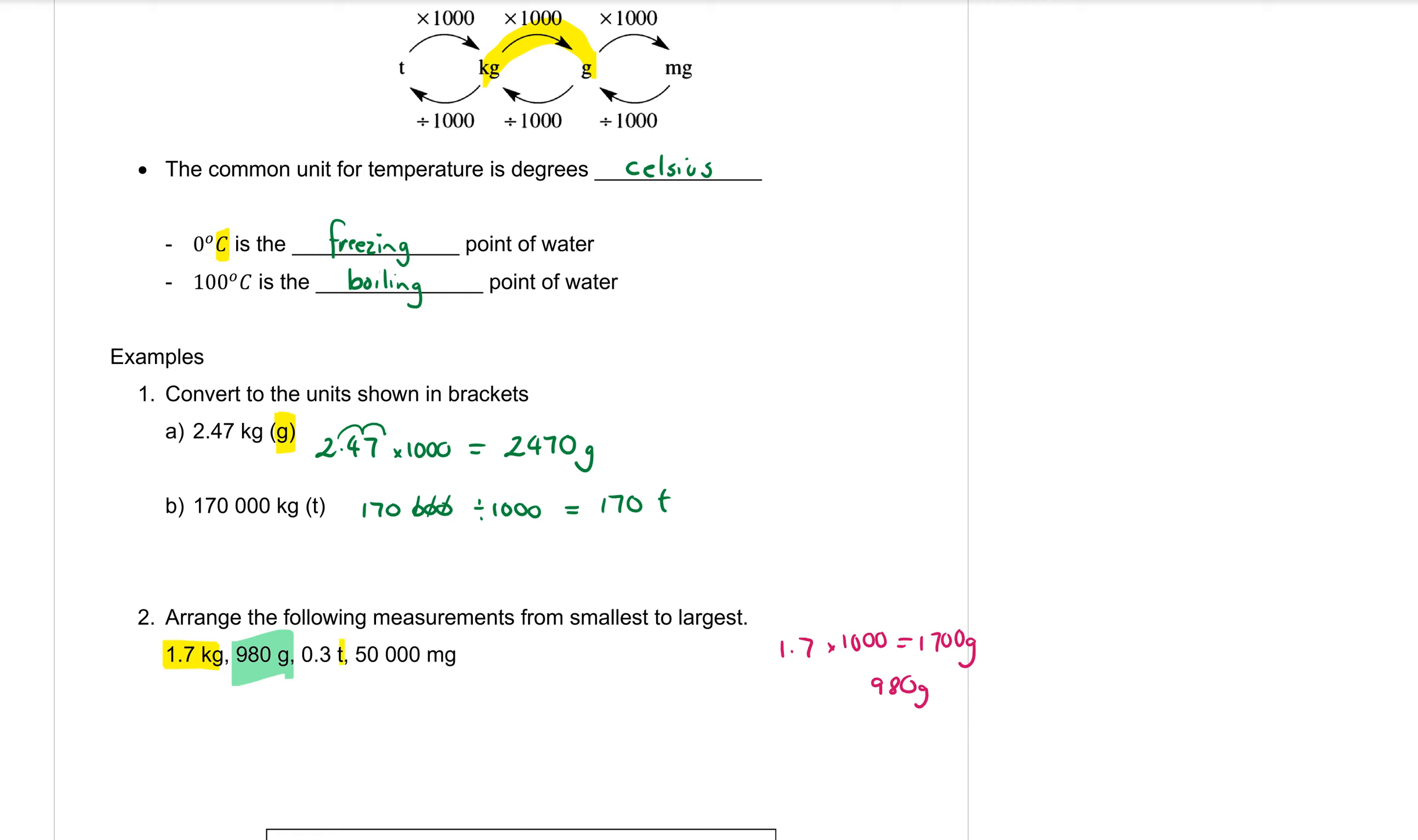The next one, 0.3 tons. Changing tons to grams I have to times by 1,000 and times by 1,000 again. So I had 0.3 times a thousand times a thousand. That's 6 jumps we've got to do there. So it's going to be 3 with 1, 2, 3, 4, 5 zeros.